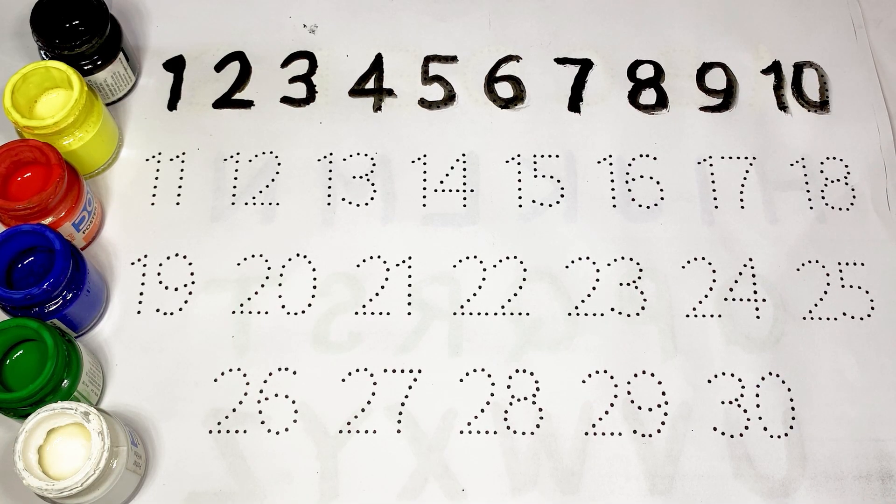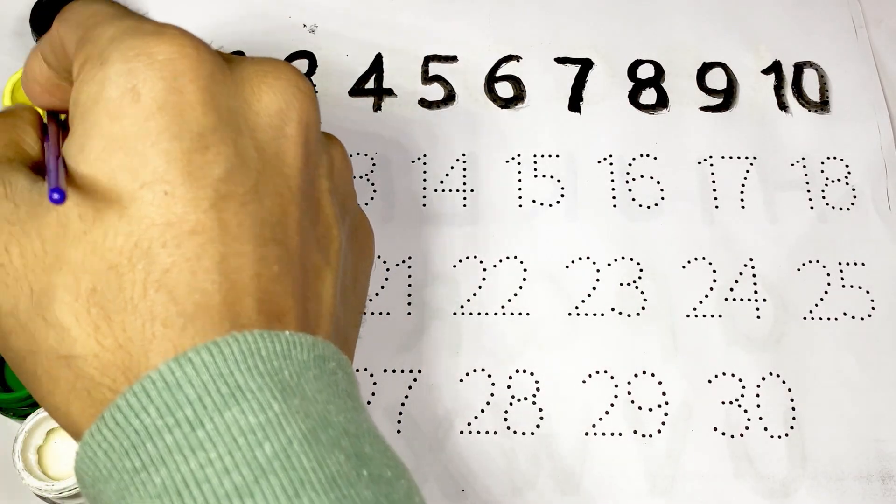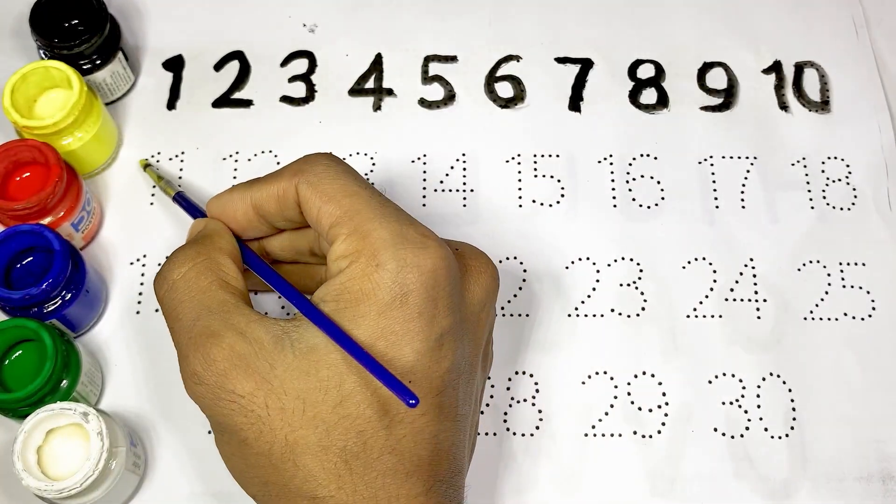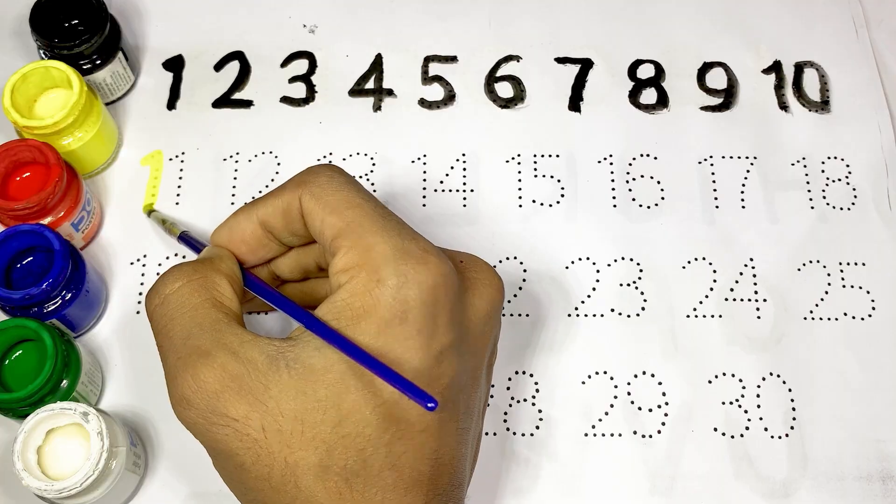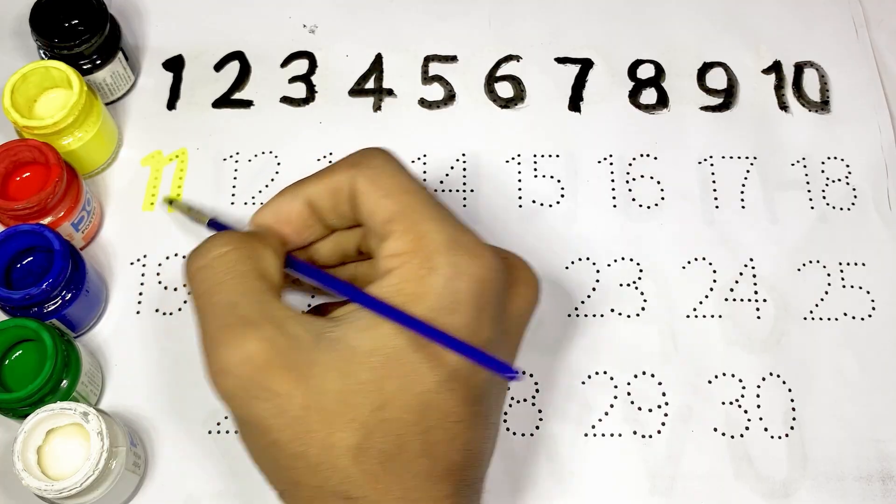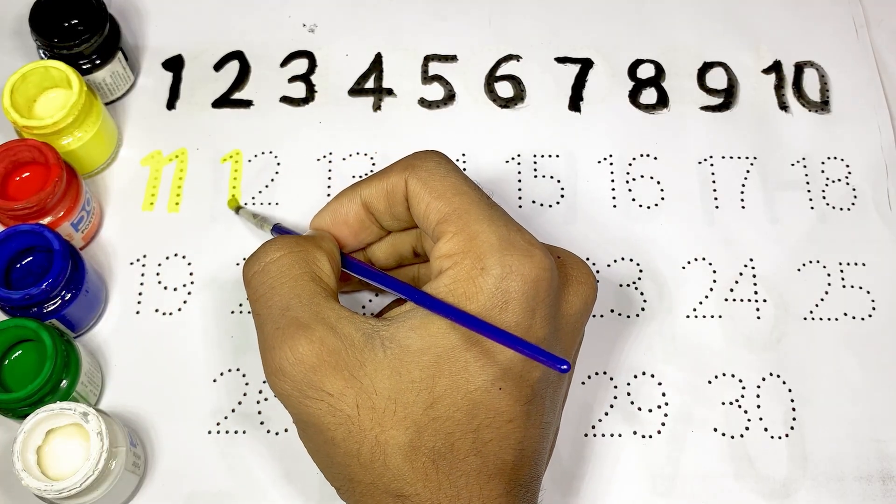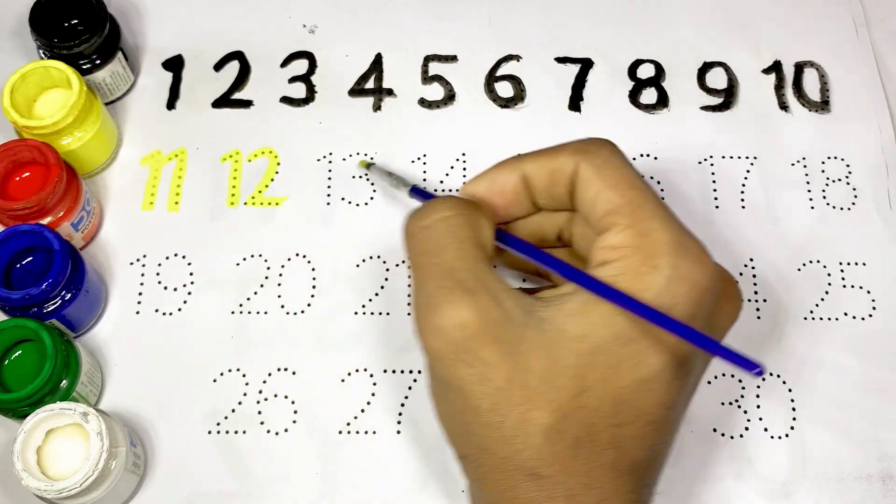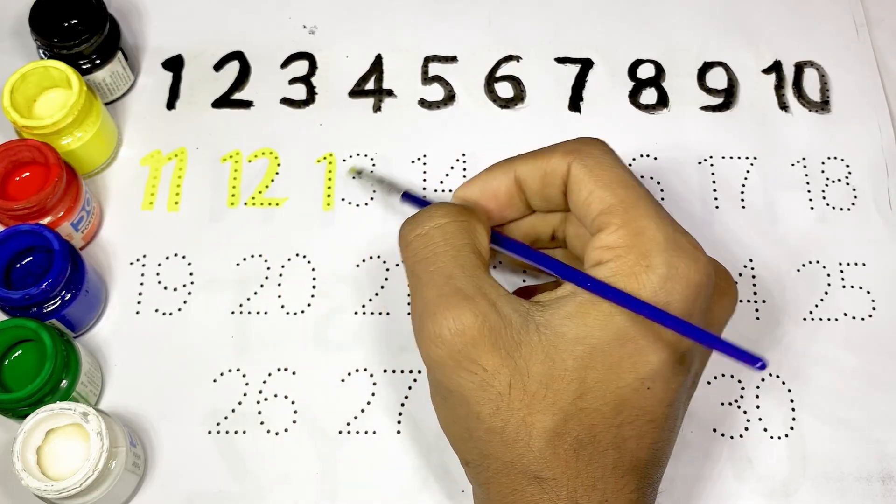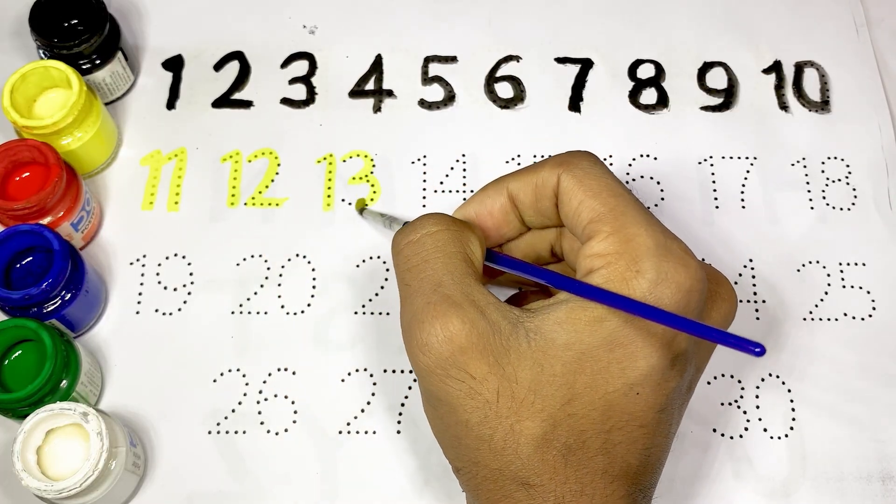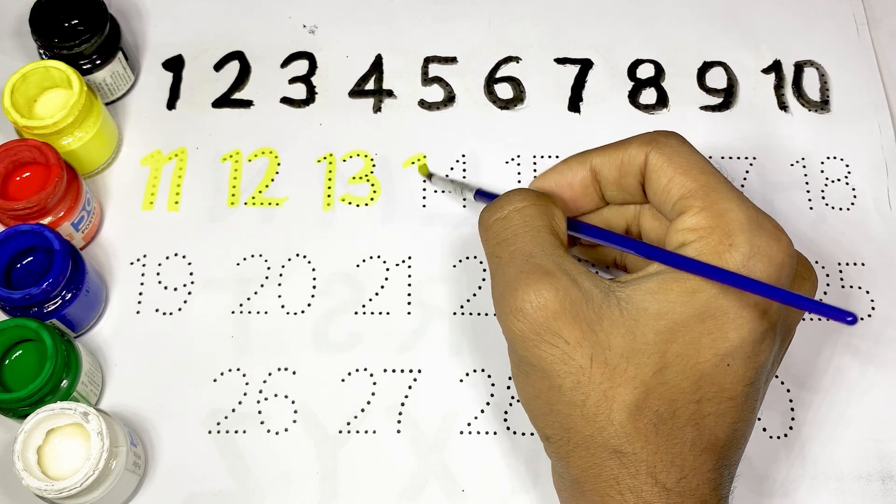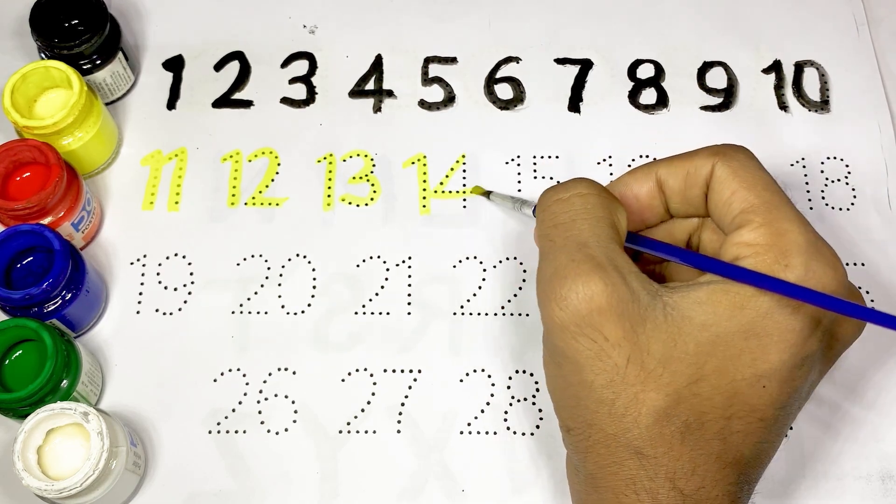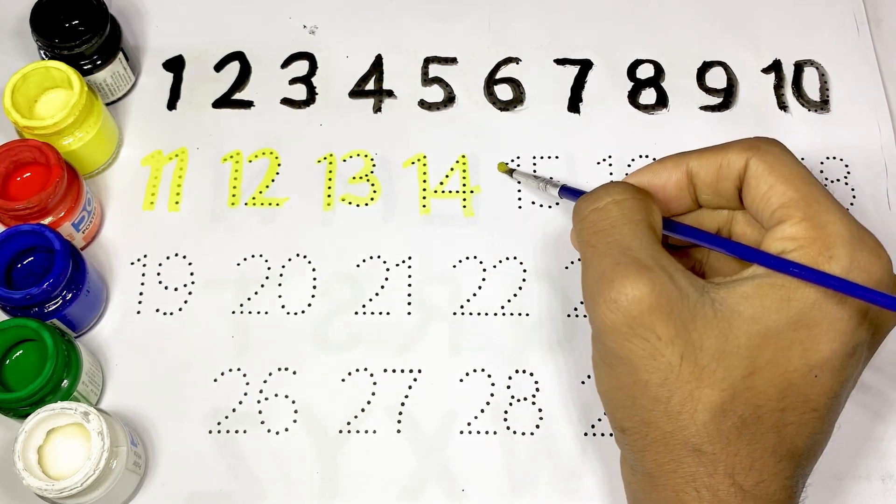Kids, numbers 11 to 18 use yellow color. Yellow color. This is eleven. This is twelve. This is thirteen. This is fourteen. This is fifteen.